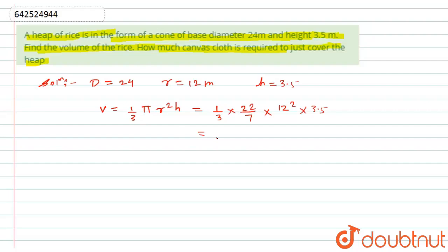Now after solving this, you will get the answer as 528 meter cube, which is the volume of this cone. Now the second thing stated here is to calculate how much canvas cloth is required to just cover the heap.